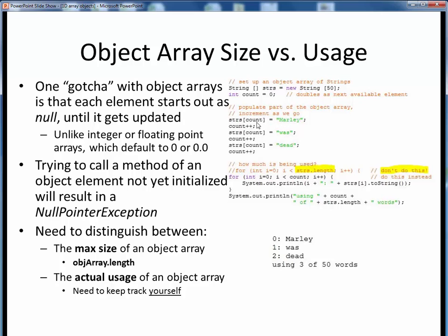So we assign Marley to the 0th element, up the count to 1, and then that becomes the count of strings and the next array element index.